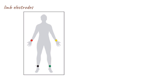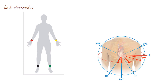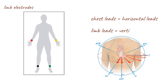The 10 electrodes mentioned above produce 12 different views of the heart, also called 12 leads. The ECG leads are grouped into two electrical planes, the horizontal and vertical planes. The chest leads view the heart from a horizontal plane, while the limb leads view the heart from a vertical plane.